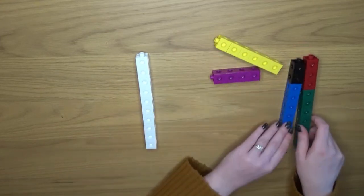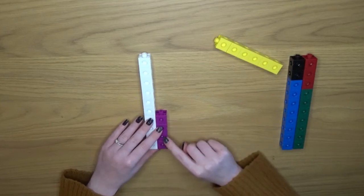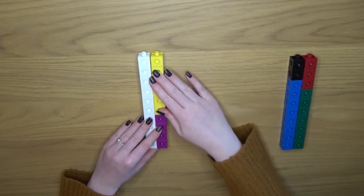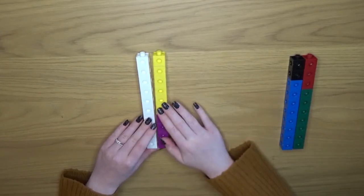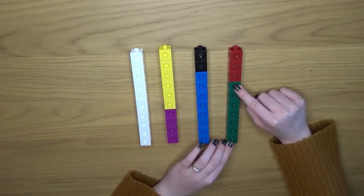Of course as children get a little bit more skilled with this you can give them their starting tower and then they can use the blocks individually to find their own number bonds to ten. Having the colours is a really great visual indicator of what quantities work together to make ten.